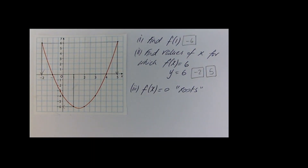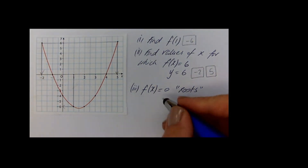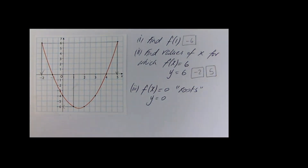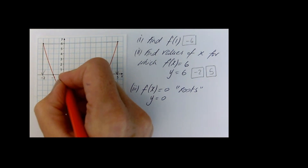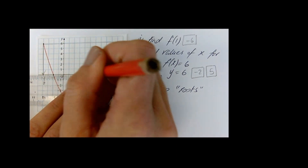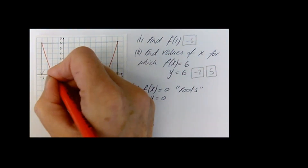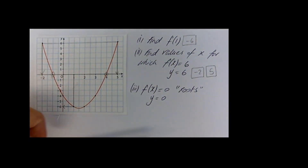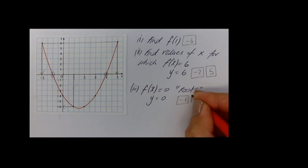This time we want to find the values of x for which f of x is equal to 0, or you can be asked to find the roots. So if f of x is equal to 0, that can be written as y is equal to 0. Y equals 0 is the x axis, and so the roots are basically where the graph cuts the x axis — and that is minus 1 and 4.